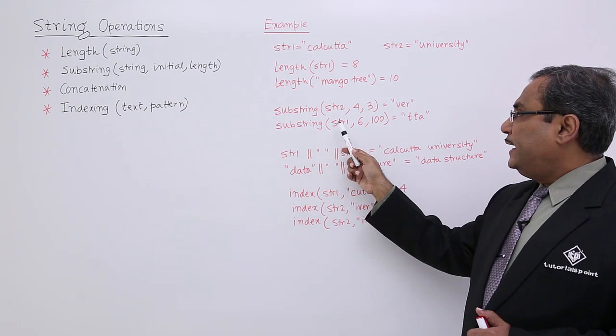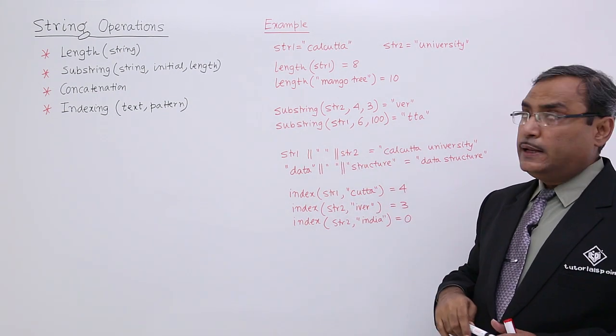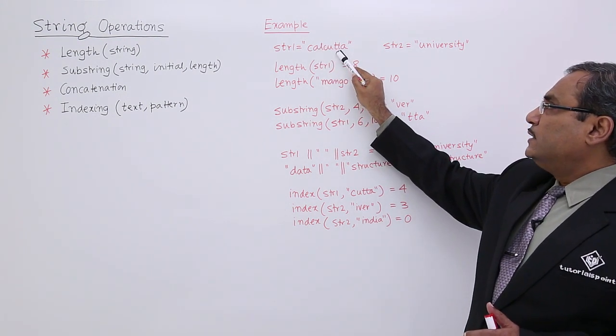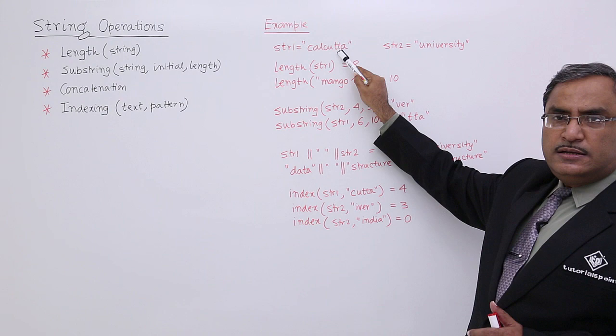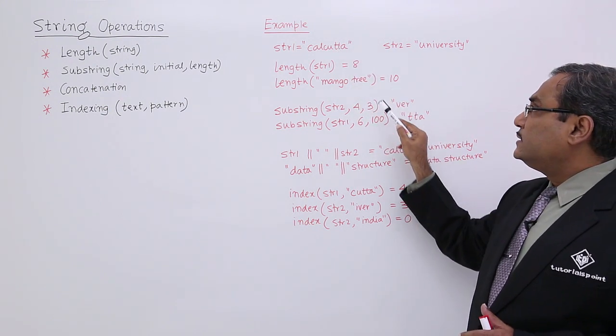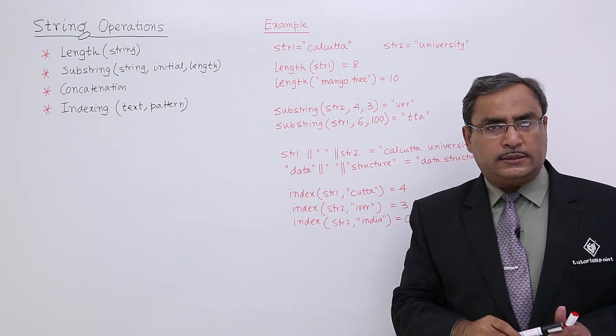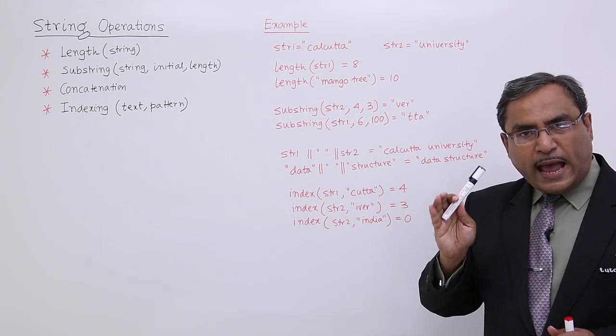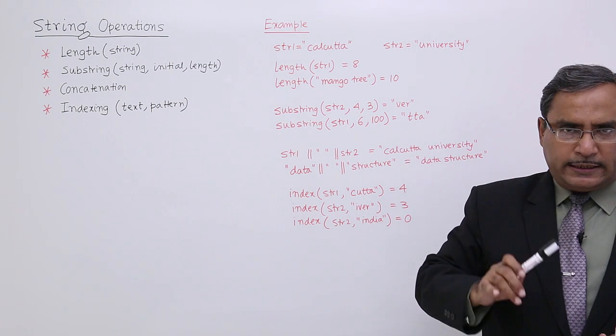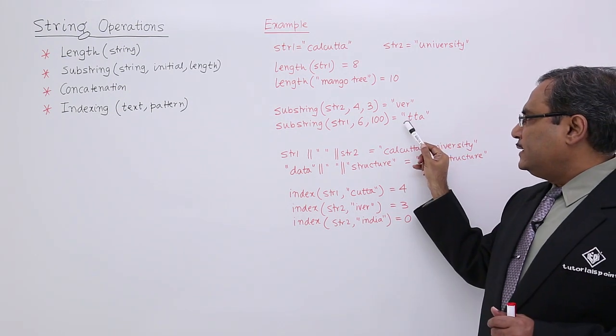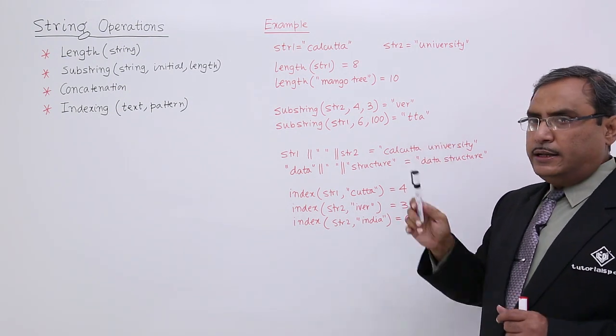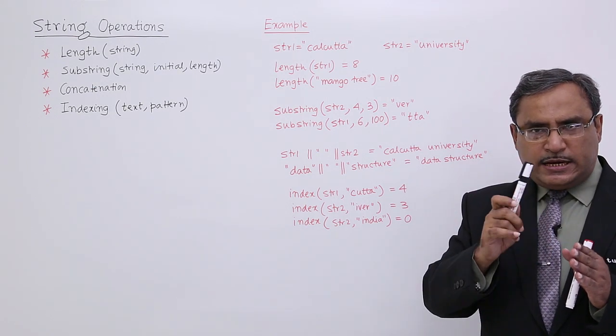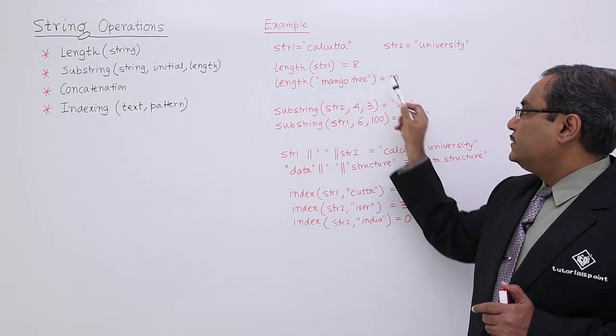Then substring STR1 6 comma 100. From the 6 characters, so 1, 2, 3, 4, 5, 6. So 6 means the first T, and 100 characters. You see 100 characters are not there. That is why it will take up to the last character without appending or prepending any blank characters. There are no blank characters appended or prepended. It will just pick out only the TTA, that part of this Calcutta.